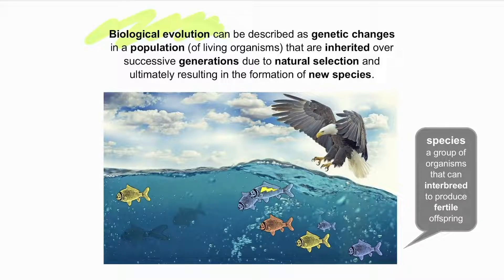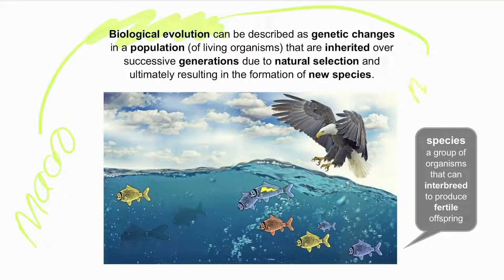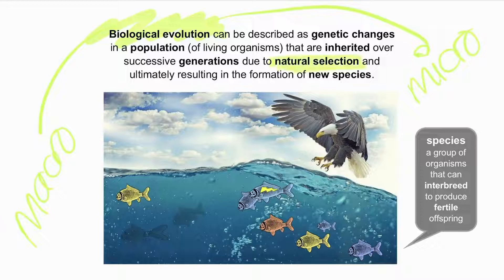There are two types of biological evolution. Number one: macroevolution. And number two: microevolution. Both of these rely on the mechanism of natural selection, as well as mutations and gene flow.